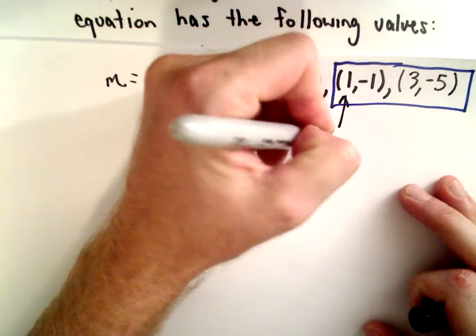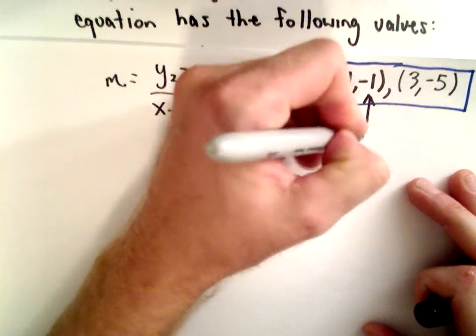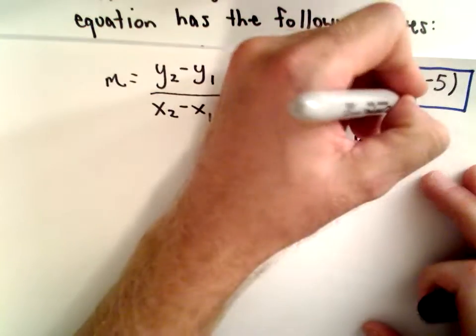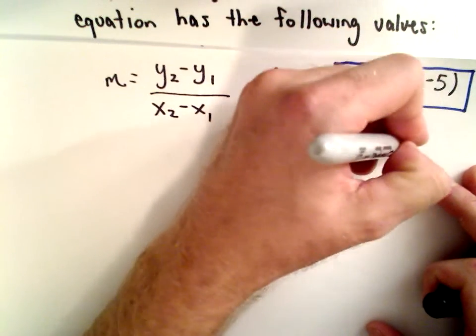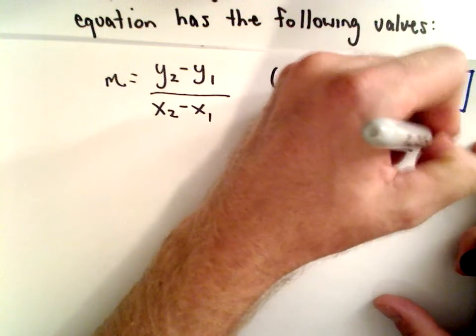So there's going to be my x1. That's going to be my value of y1. There's x2 and there's y2.